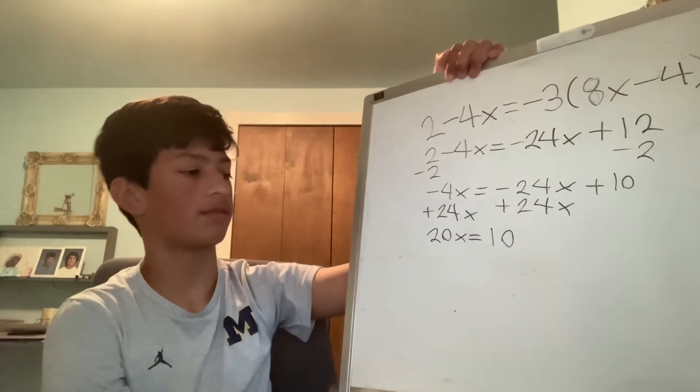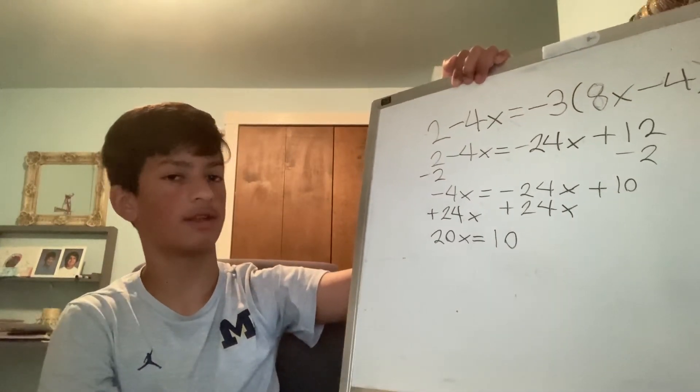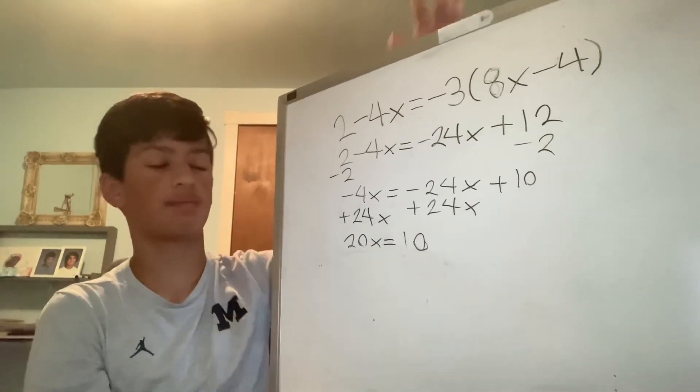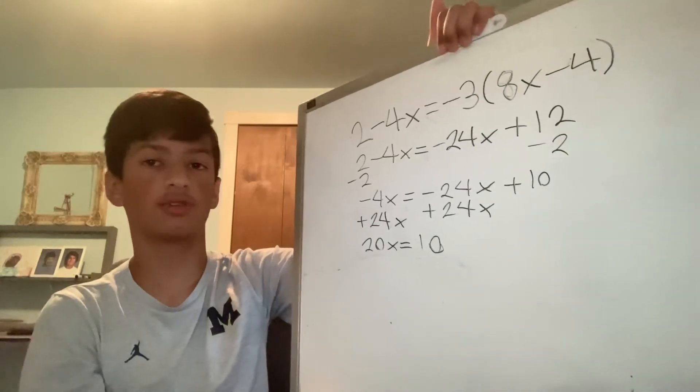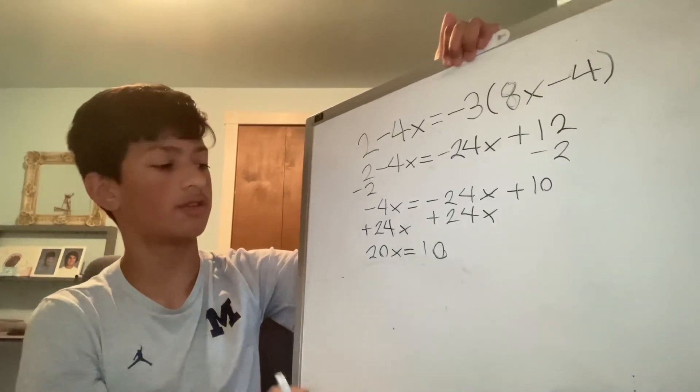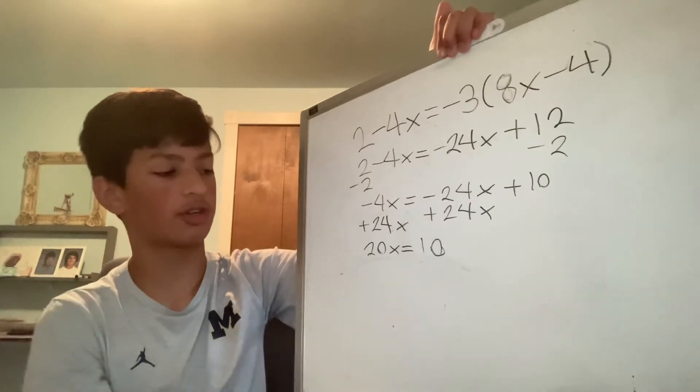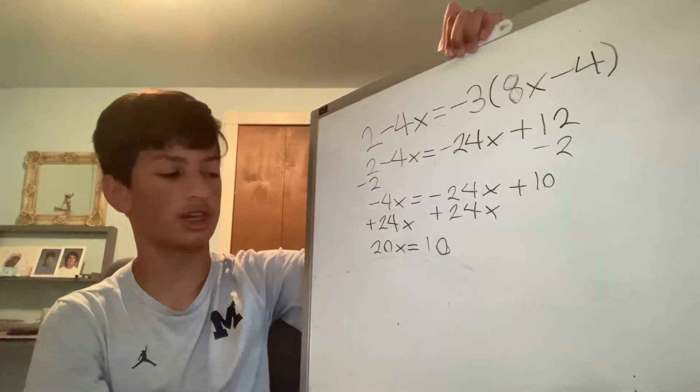After this, I'm left with 20x equals 10. In my final step of solving this equation, I must use the division property of equality to divide both sides by the coefficient of x, which in this case is 20.